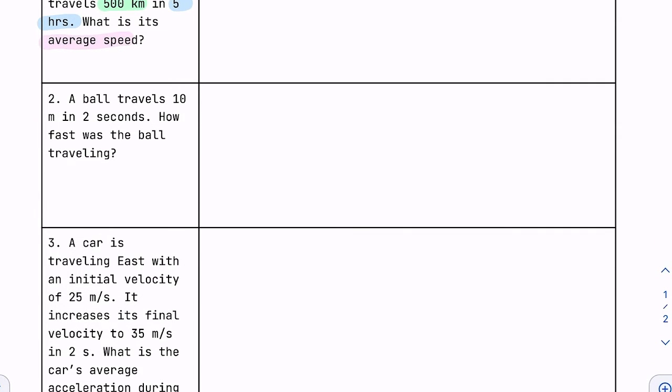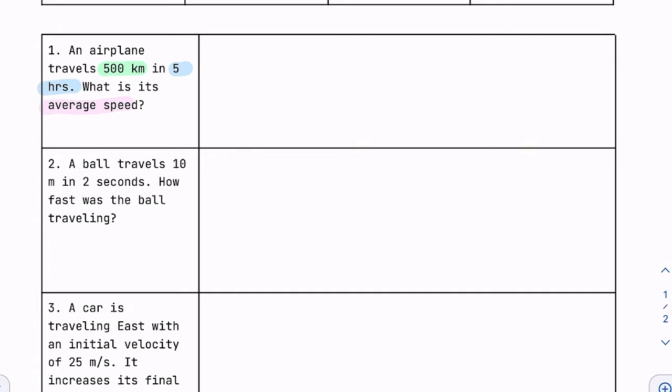We know that 500 kilometers is a measurement of distance. So I'm going to write D equals 500 kilometers. Next, 5 hours. Well, that is time. And lastly, I'm going to write down the variable that we're trying to solve for, and that would be average speed, so I put question marks for that.